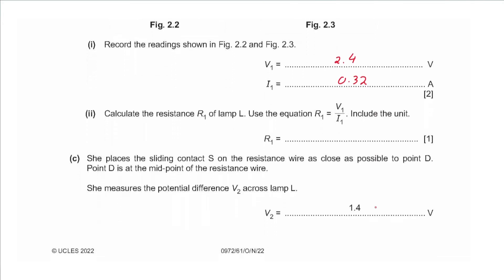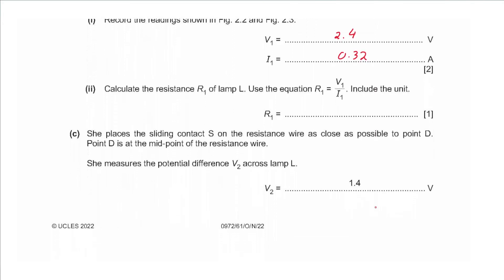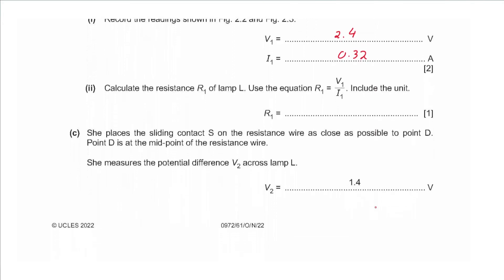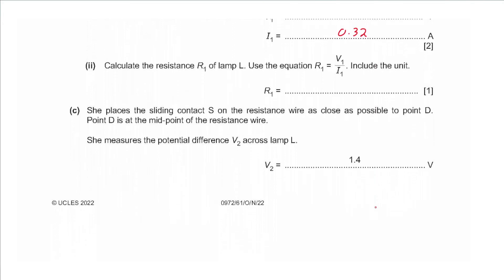For the ammeter: there are 10 divisions between 0.2 and 0.4 with 0.3 in the middle, so each division is 0.02, giving 0.32 A. Part B(ii) says calculate the resistance R1 of the lamp using R1 = V1 / I1. Dividing 2.4 by 0.32 gives exactly 7.5 ohms.